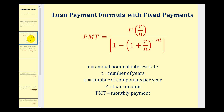Here is the loan payment formula for a fixed amount of equal payments, where R is the annual nominal interest rate expressed as a decimal, T is the time in years, N is the number of compounds per year, P is the amount of the loan, and PMT represents the monthly payment.